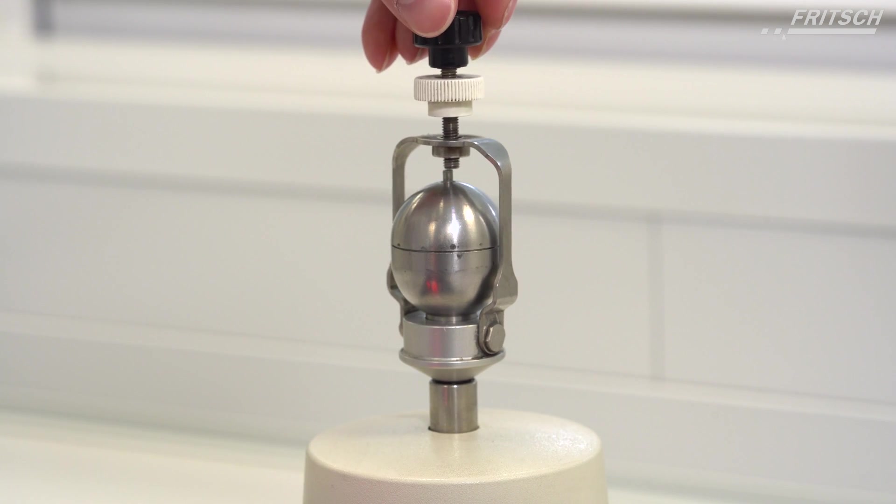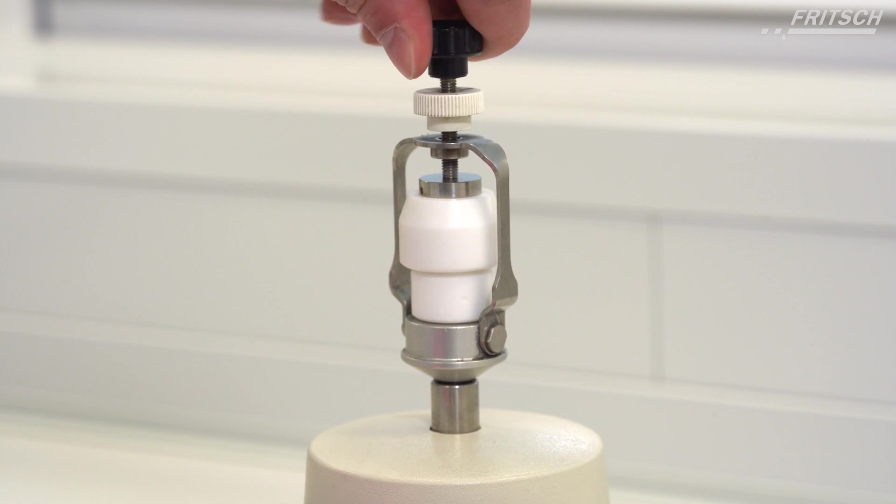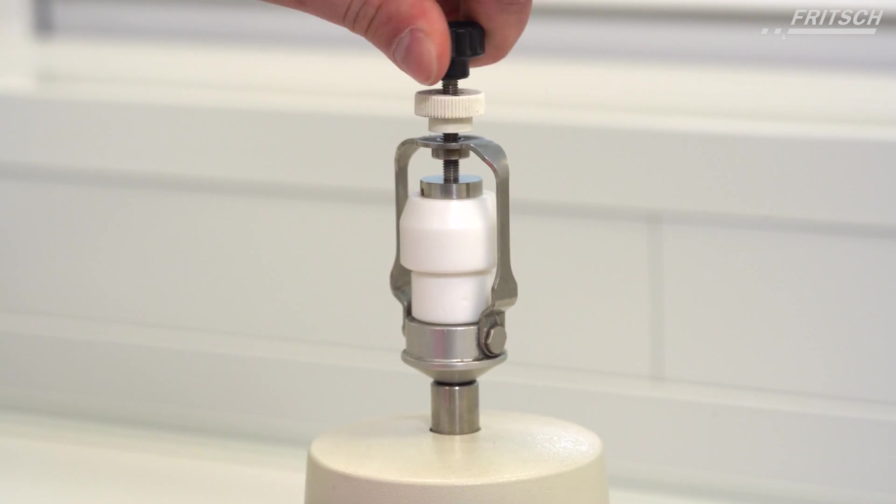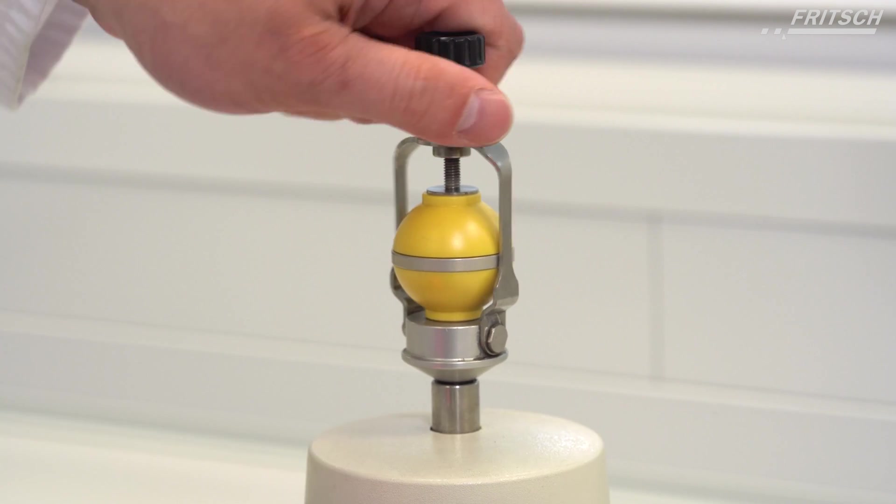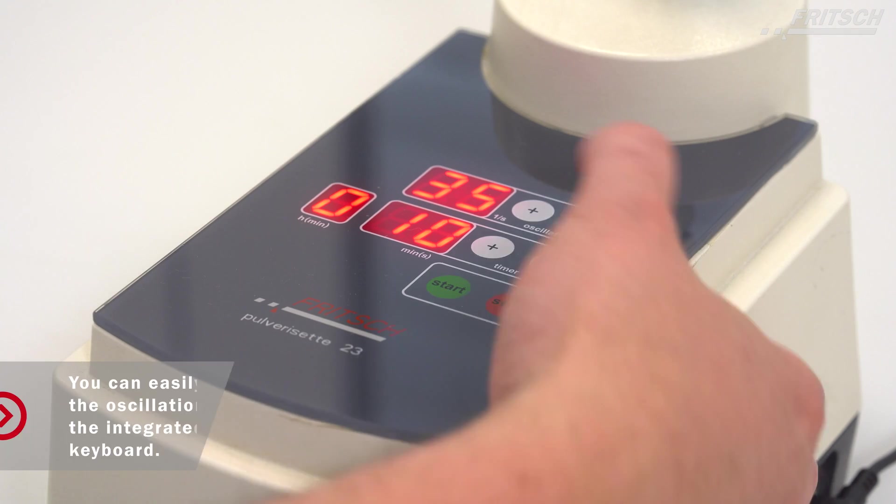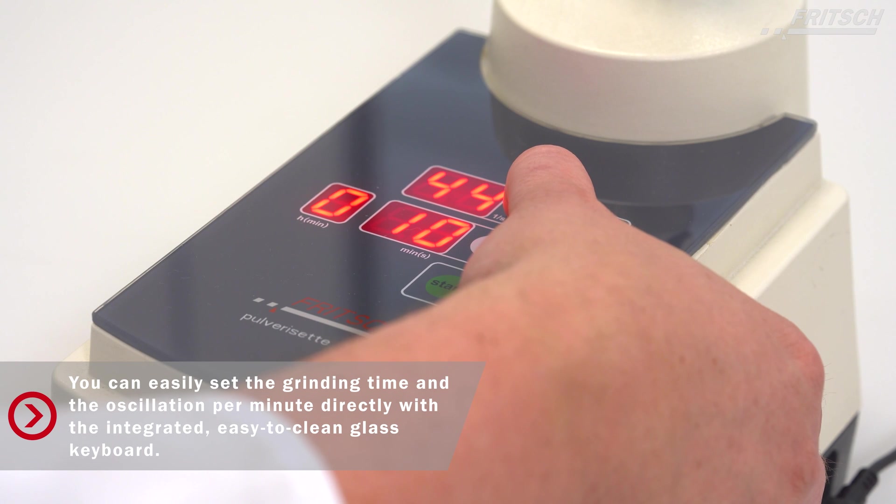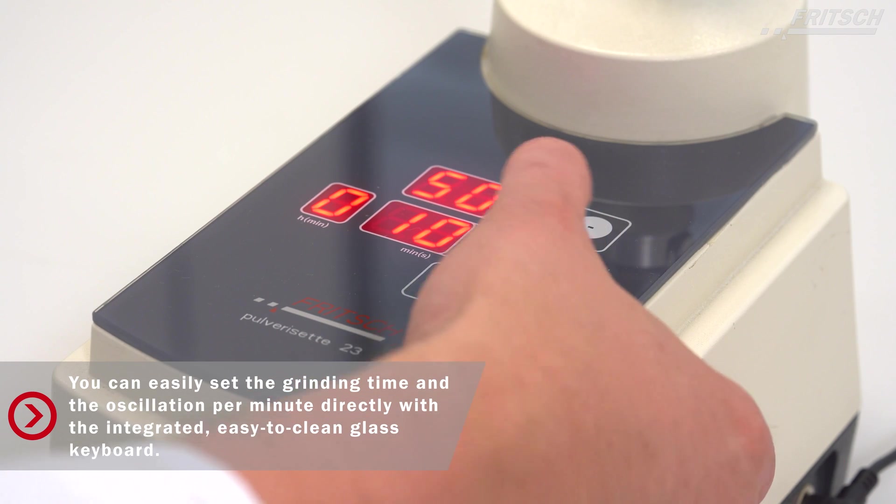For your Fritsch MiniMill Pulverisette 23, you require one grinding bowl and a corresponding number of grinding balls. Normally, grinding bowls and grinding balls of the same material are used. In principle though, the grinding bowl material must be harder than the material to be ground.